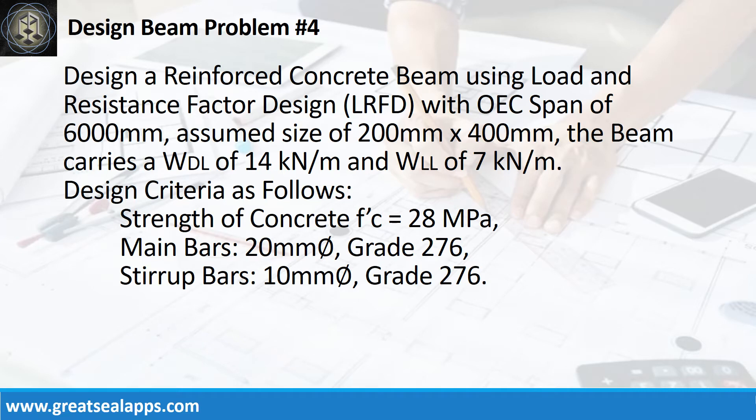Design a reinforced concrete beam using load and resistance factor design with one end continuous span of 6000 mm. Assume a size of 200 mm by 400 mm. The beam carries a uniform dead load of 14 kN per meter and a uniform live load of 7 kN per meter.